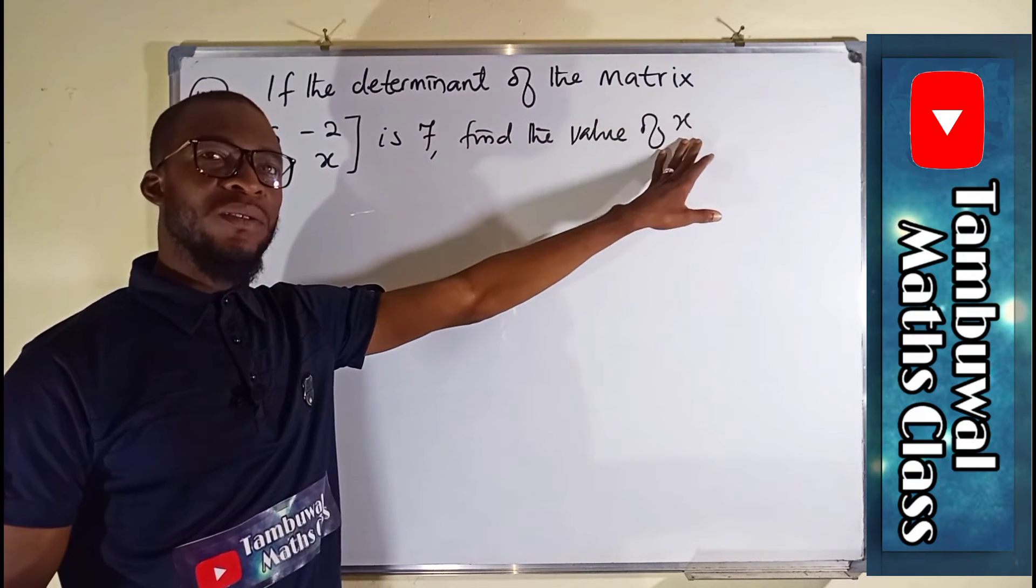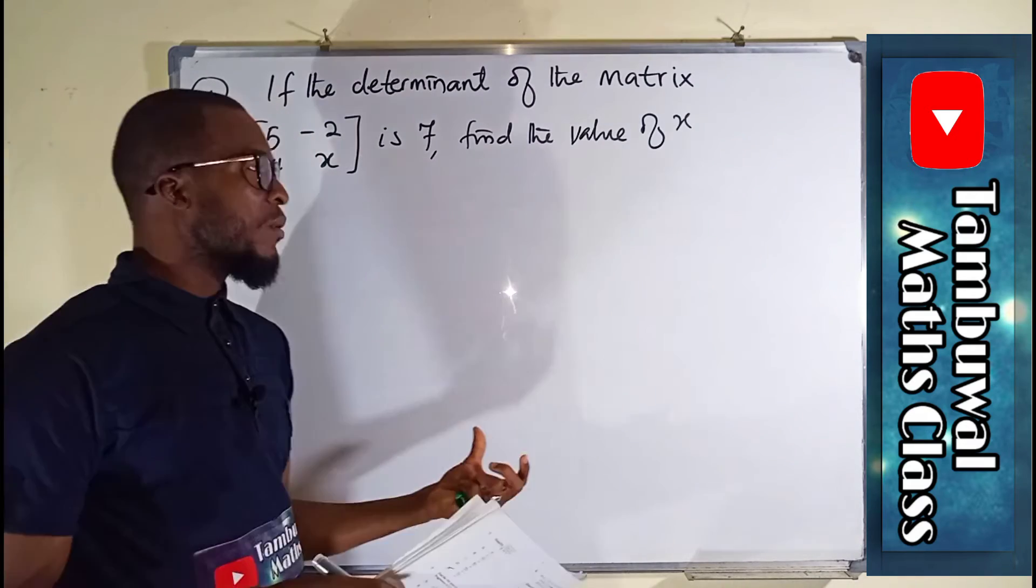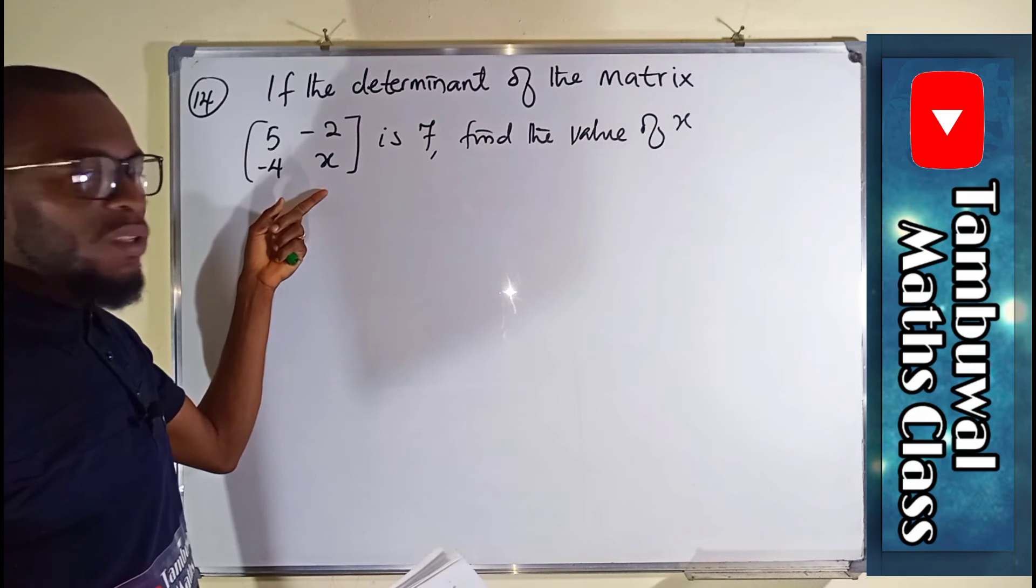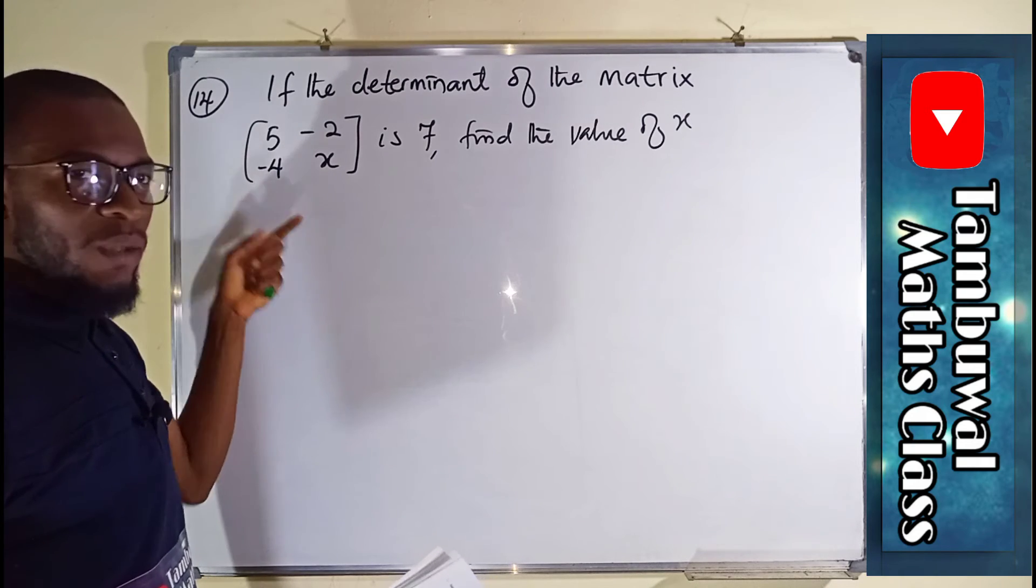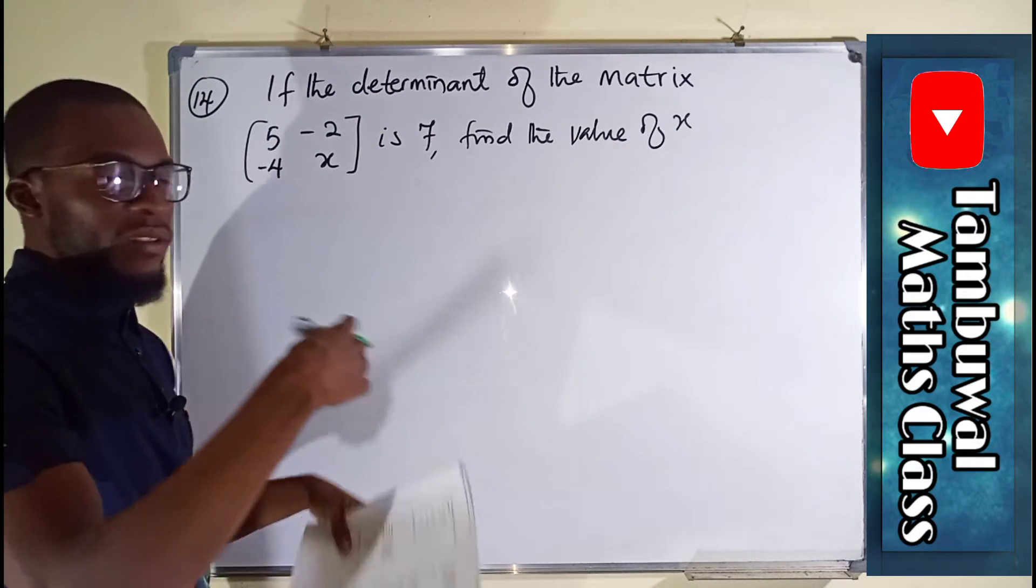You cannot find the value of x unless you know how to find the determinant of a matrix. For example, here is a 2 by 2 matrix. To find its determinant, all we have to do is to cross multiply diagonally and take the differences.